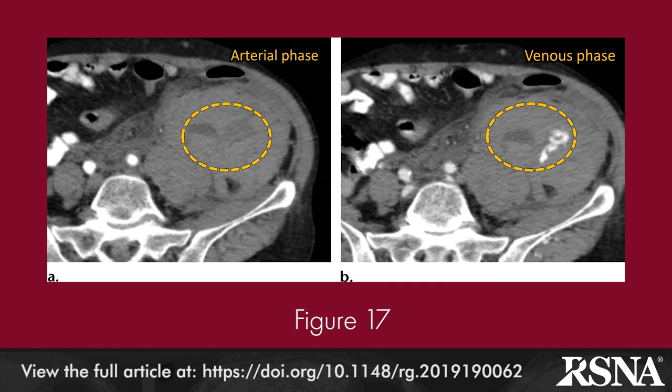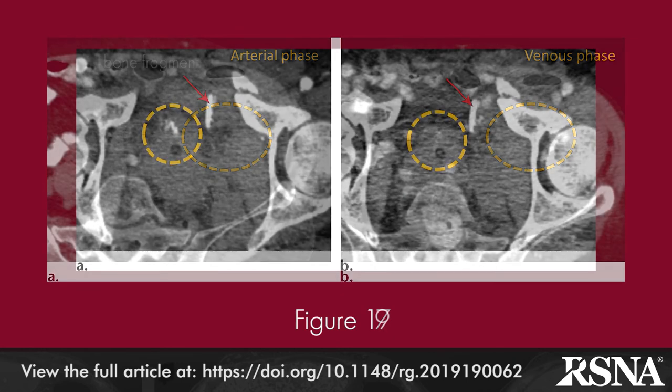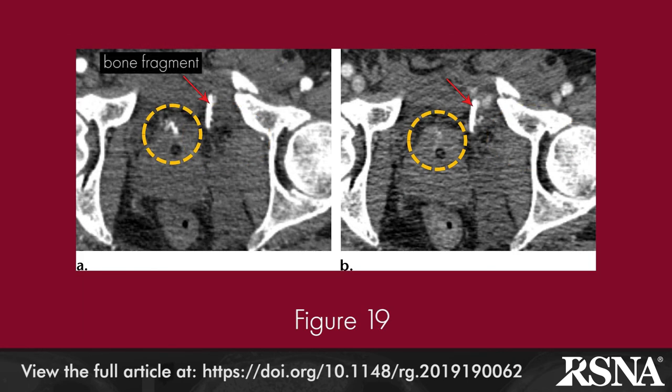Pitfalls that may lead to misdiagnosis of pelvic vascular injury may be due to improper technique, patient-related factors, or artifacts. Bone fragments may mimic vascular injury but can be distinguished from bleeding on multi-phase scans, as shown in Figure 19.